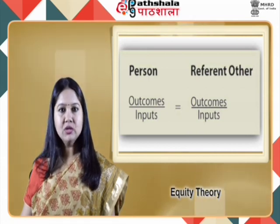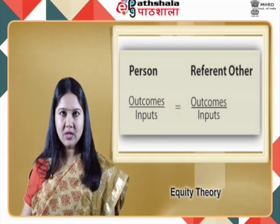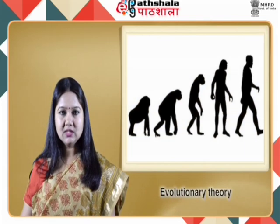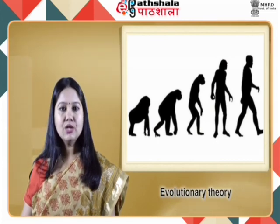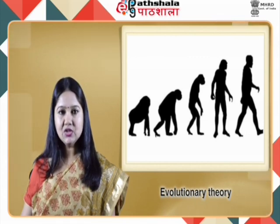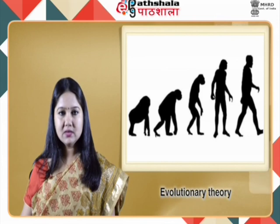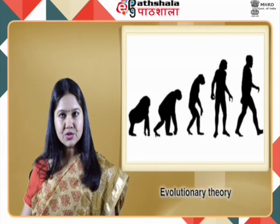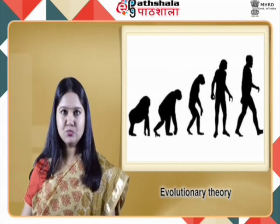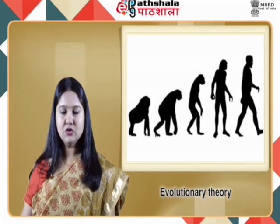According to equity theory, both under- and over-benefited partners may be motivated to restore equity, although research finds that this is truer for the under-benefited. The evolutionary theory states that attraction to the opposite sex occurs when someone has physical features indicating that he or she is very fertile, since it increases the chance of one's genes being passed down to the next generation. This theory also suggests that fertility in a mate is more important to men than to women, and that women place more emphasis on a man's ability to provide resources and protection, since these are important in ensuring the successful raising of offspring.